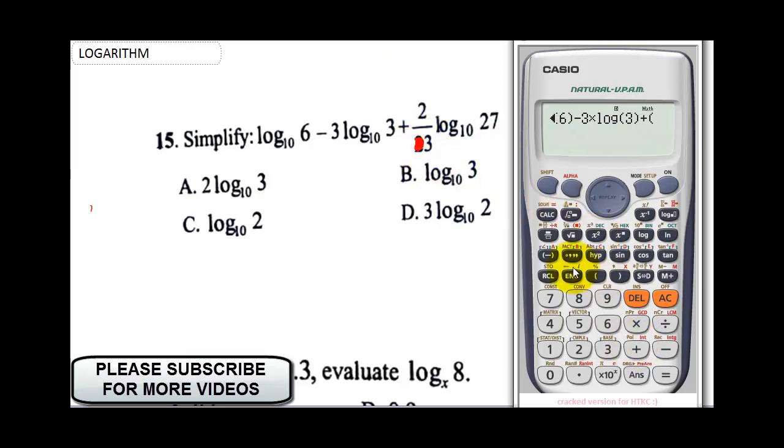Now notice it says 2 over 3, so what I'm going to do, I'm going to involve a fraction. So this will be fraction, 2, I'll press my down arrow key and put my 3, I'll push my arrow out and close my bracket.